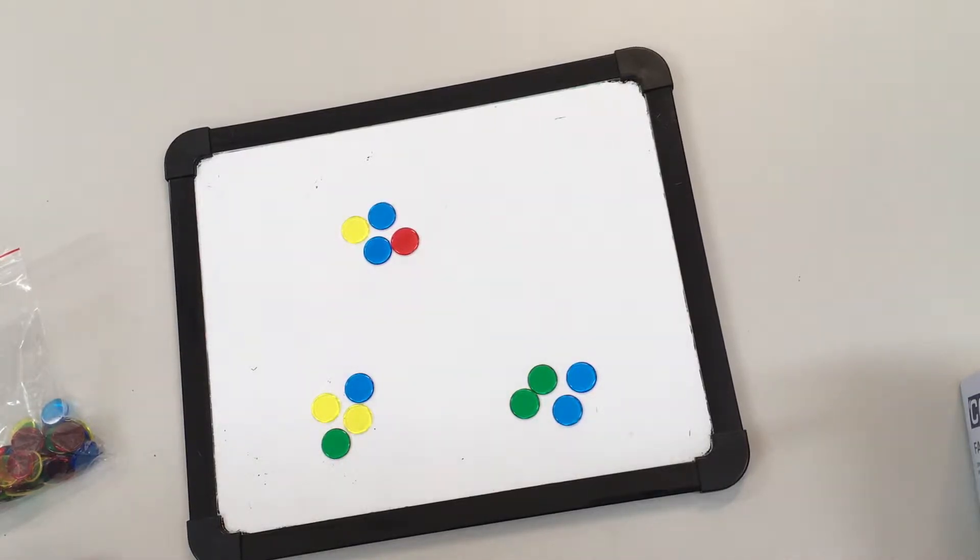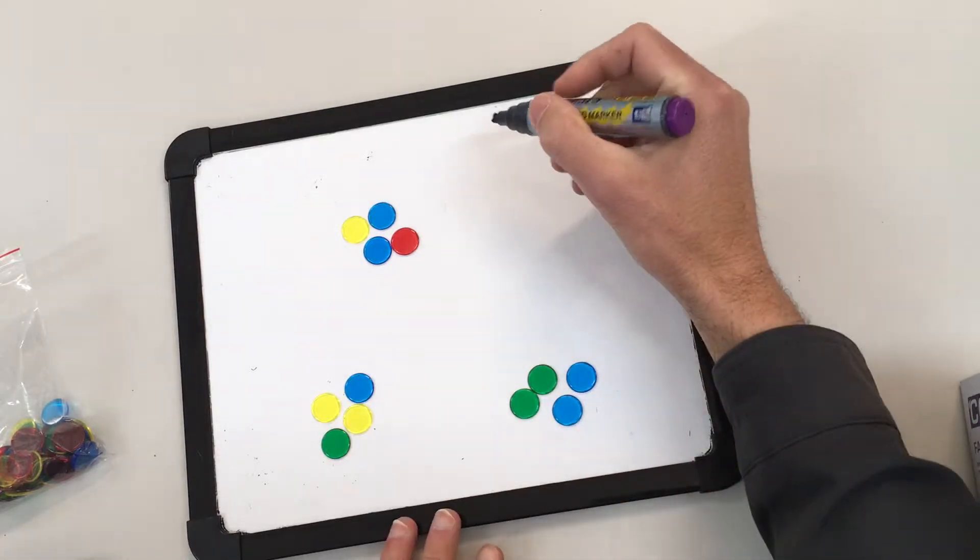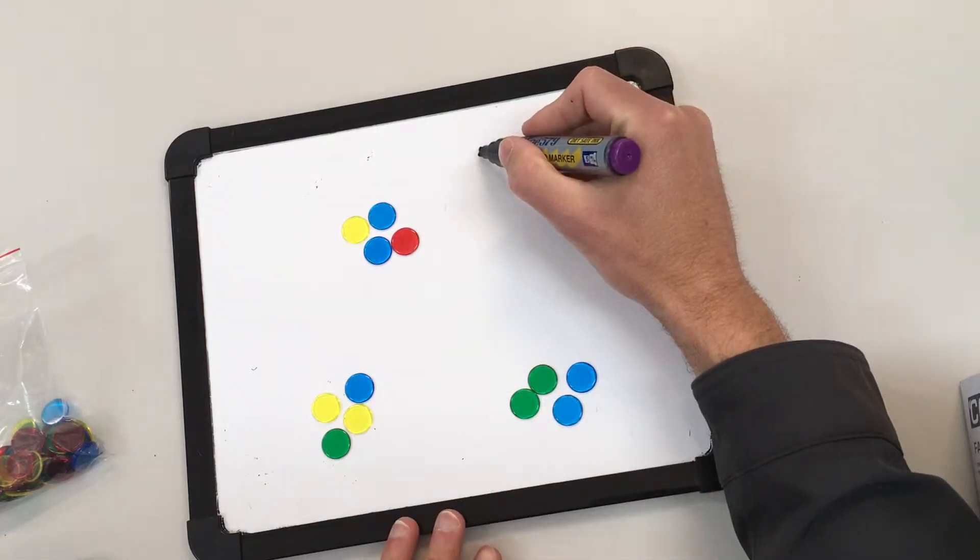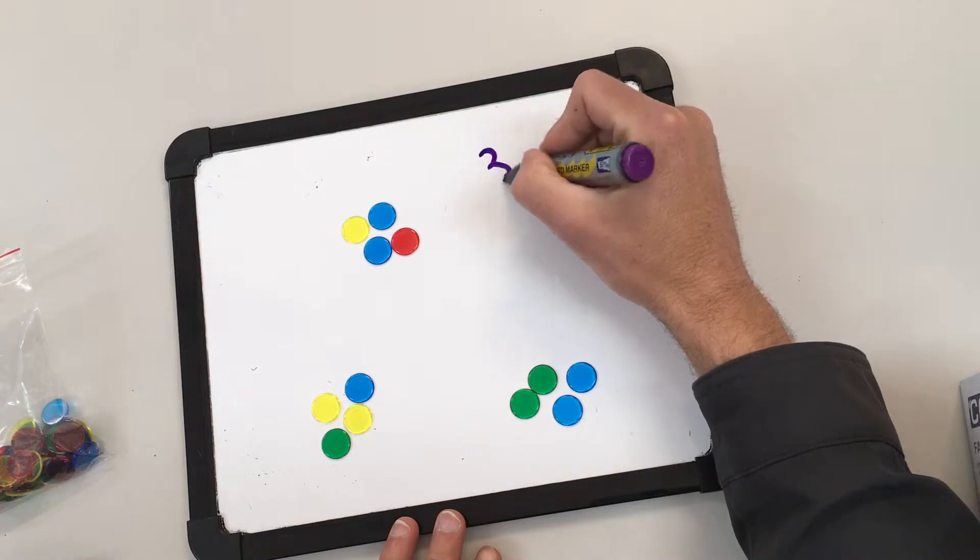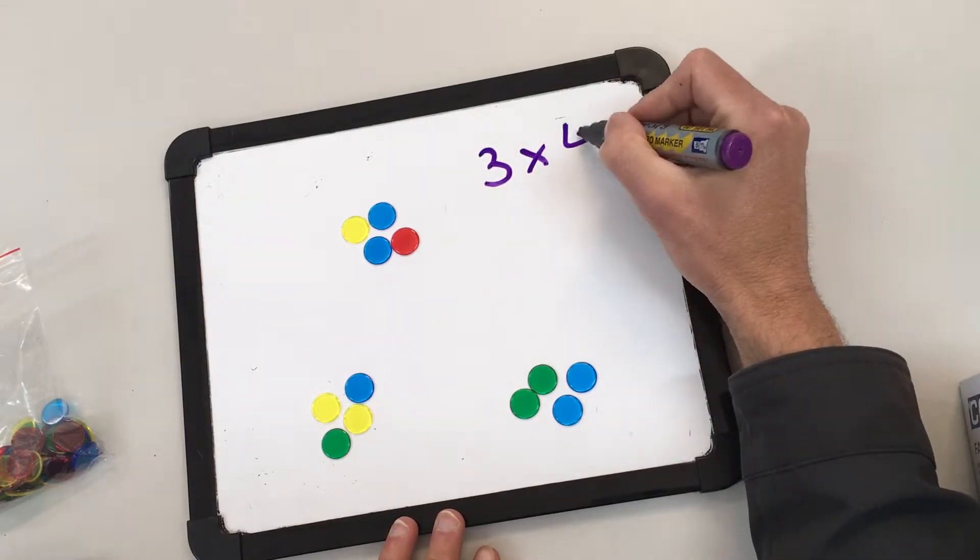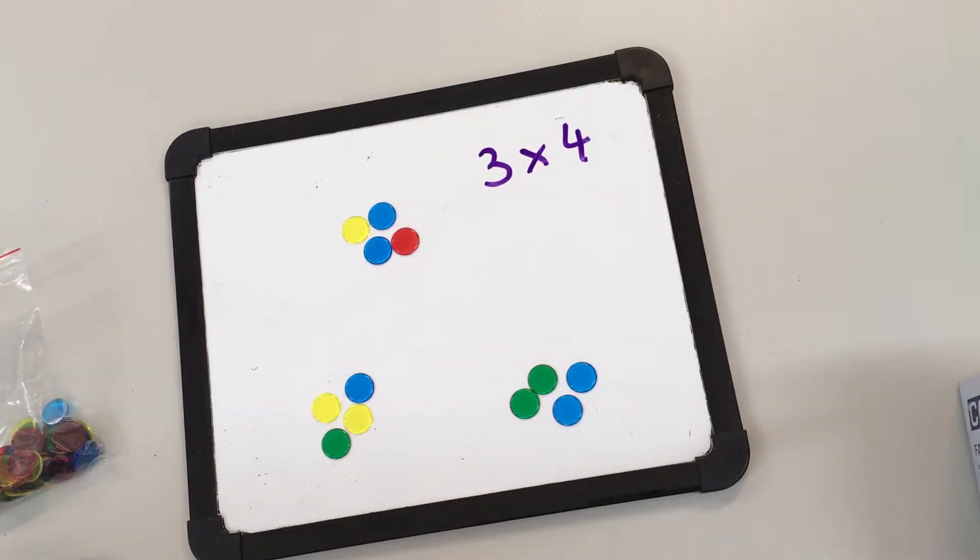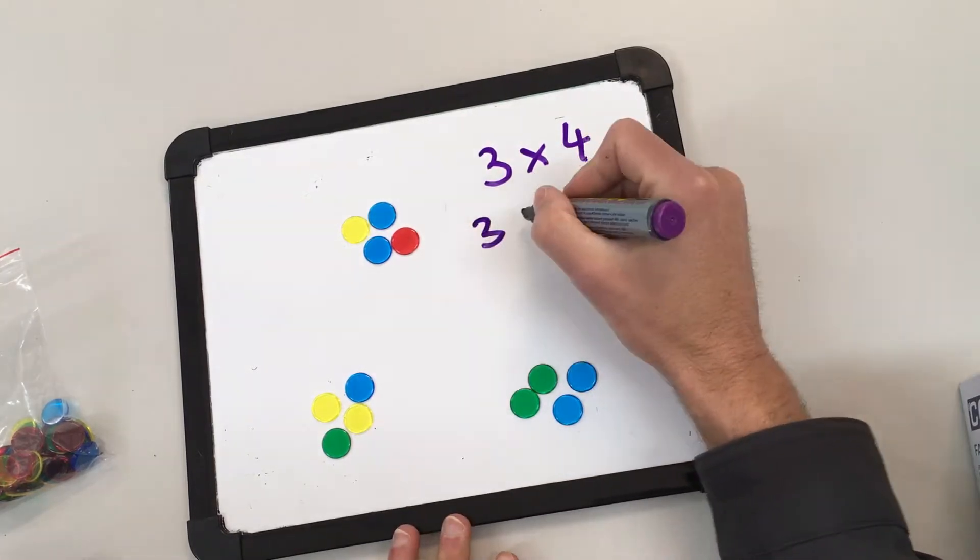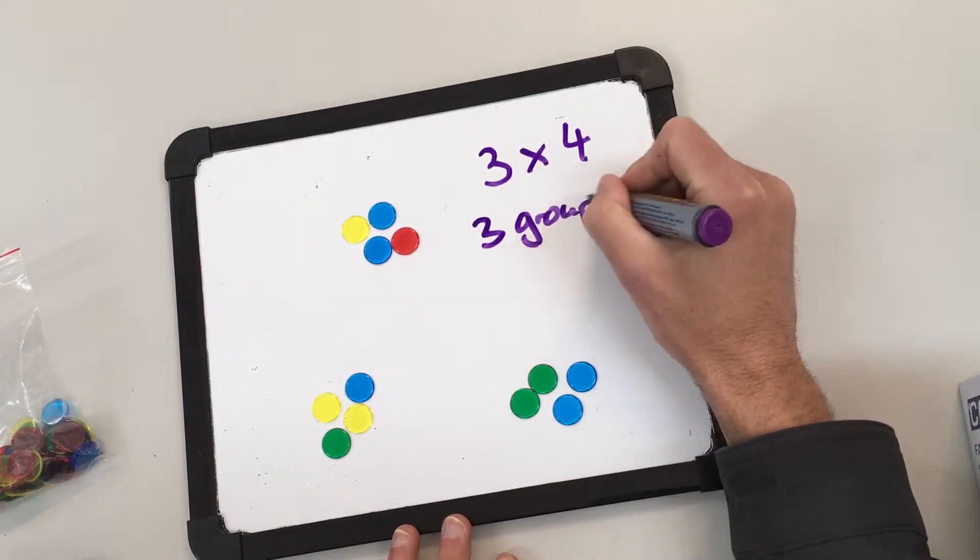Learning multiplication facts is something we do at St Francis from Kindergarten, and we start off looking at groups. As you can see here, I've got three groups of four. Now in year one, kindy, and even year two, we don't necessarily always write our multiplication facts out like that. We might just write three groups of four in that way, and this is a great way to start representing our multiplication.